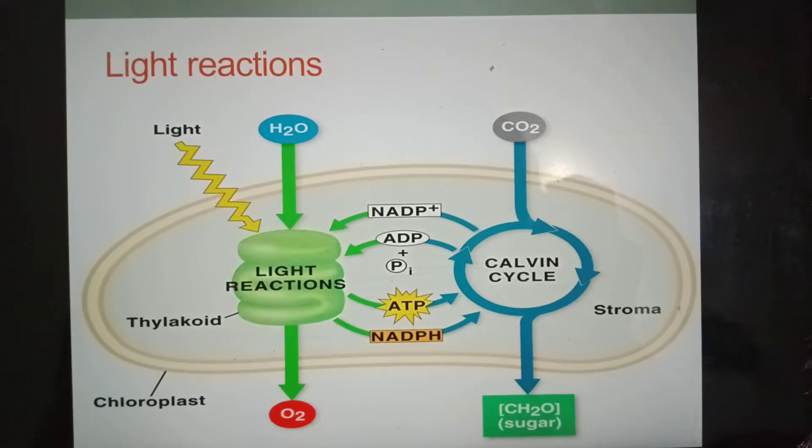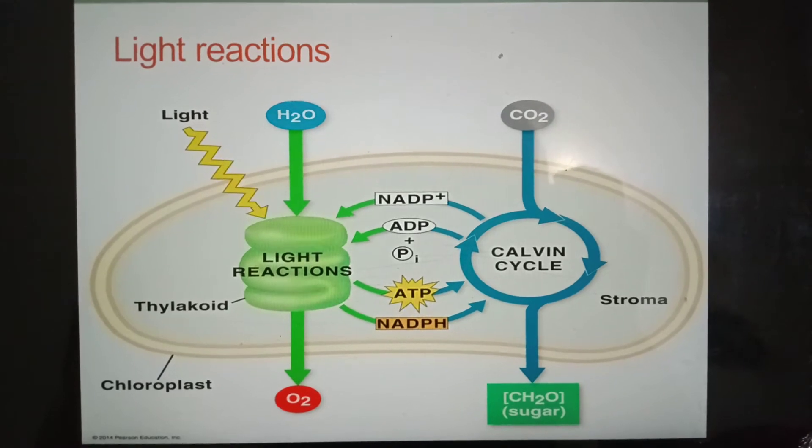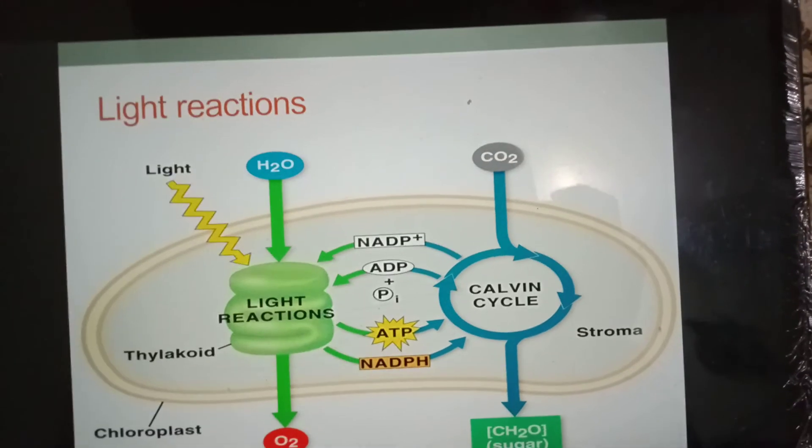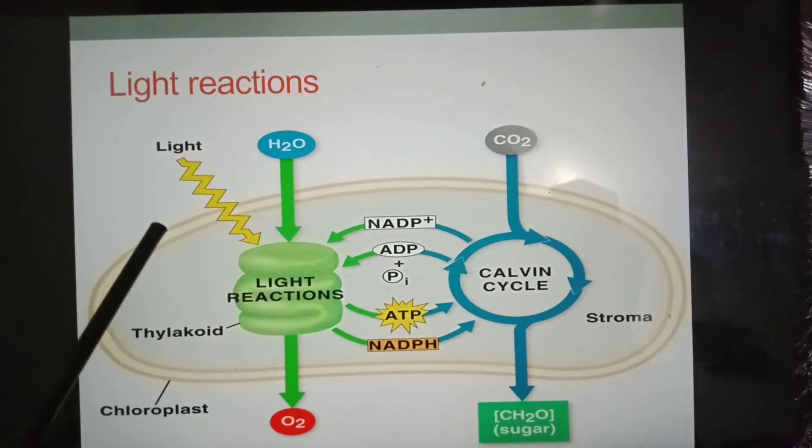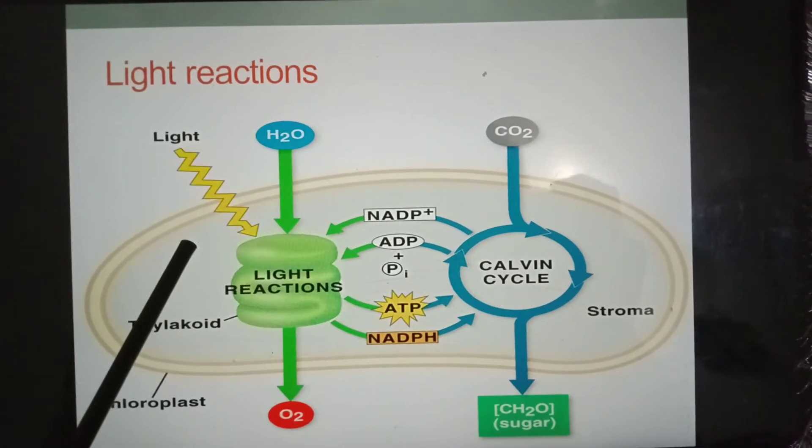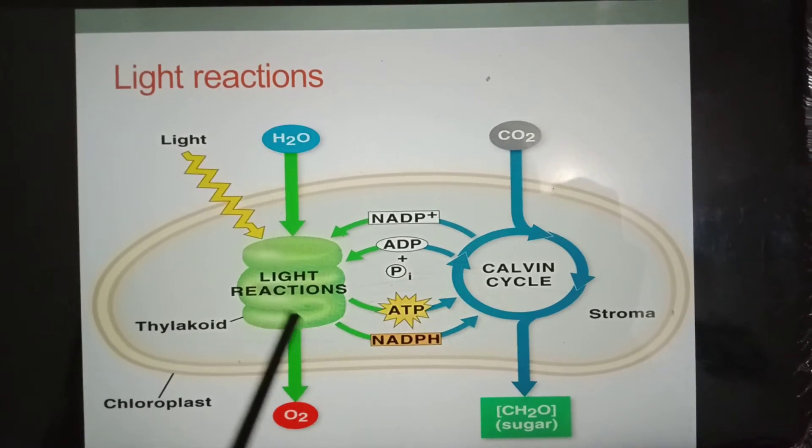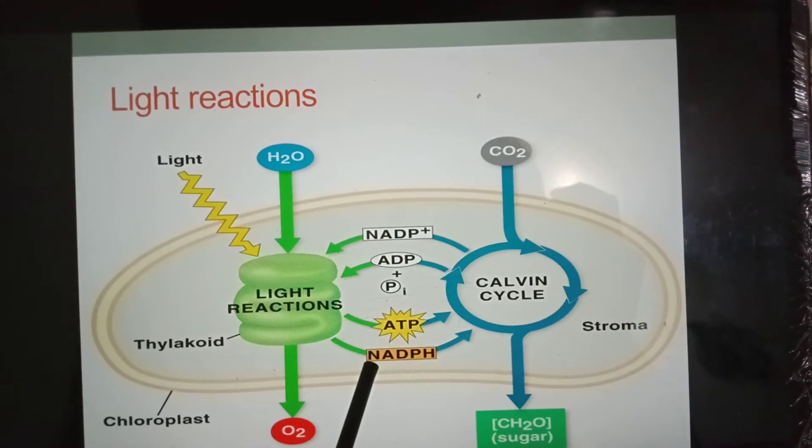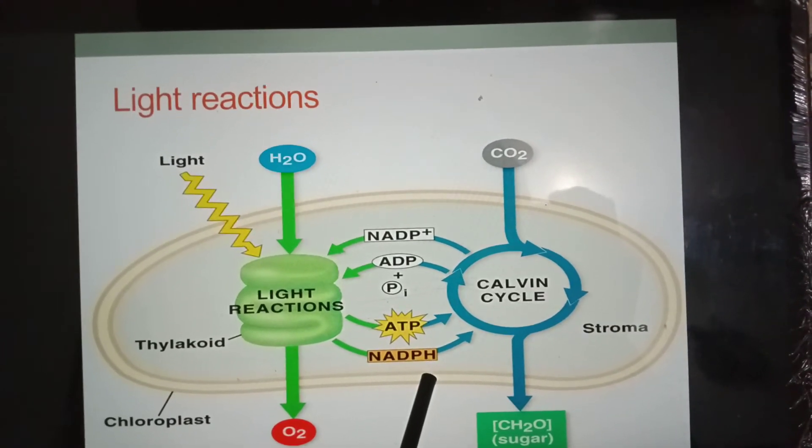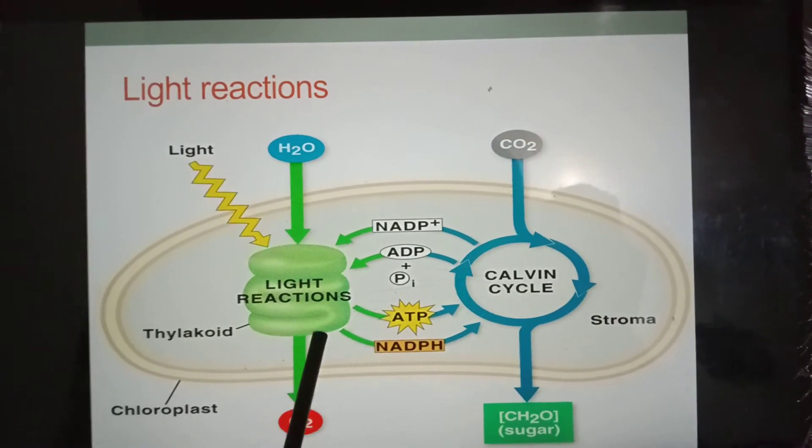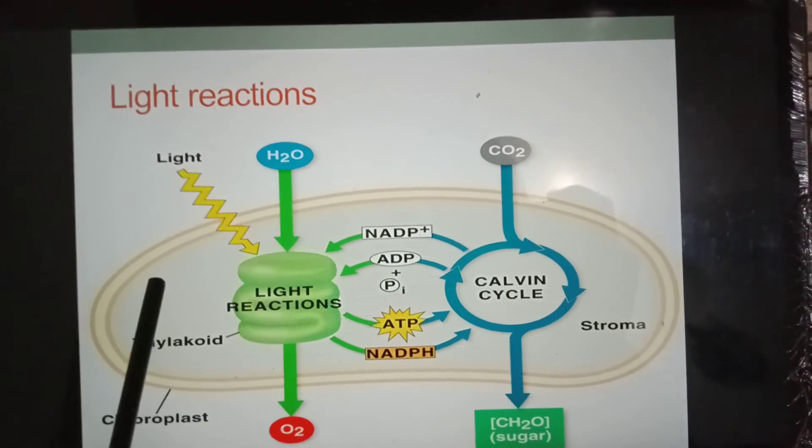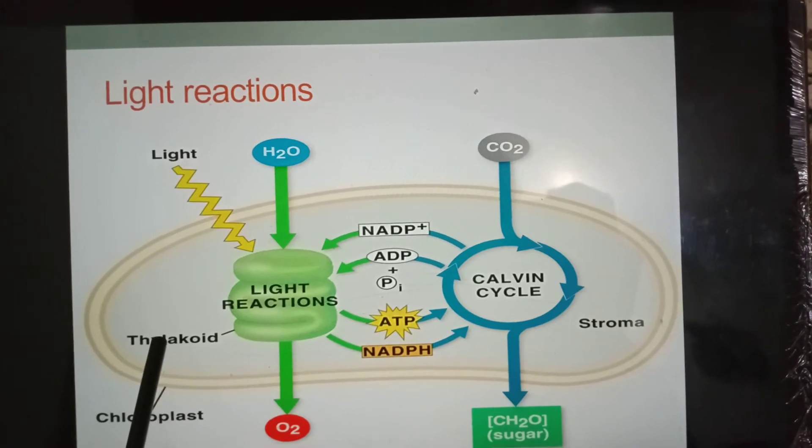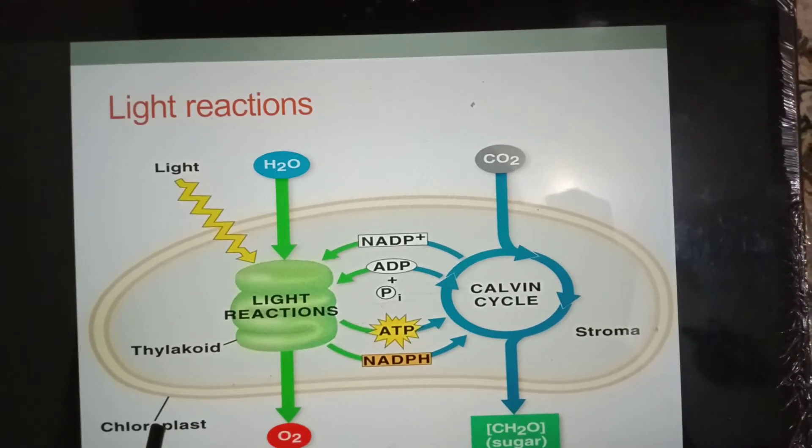Now it's time to discuss the light reactions. During the first phase, light energy is captured and used to make high energy molecules, ATP and NADPH. These reactions, which are known as light reactions, take place on the thylakoid membranes of chloroplasts.